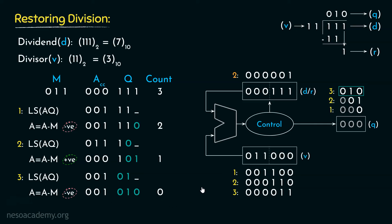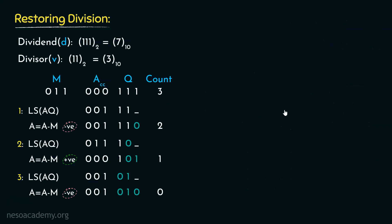Instead of shifting the M register's content to the right as we did before, this time we shifted the contents of the accumulator and Q register to the left. We are taking the AQ pair and performing left shifts instead of right shifts on the divisor. When performing left shifts on AQ, we update the MSBs in the same way we used to achieve the quotient. This significantly improves our hardware configuration — we now only require three N-bit registers and one count register.